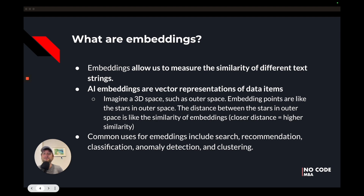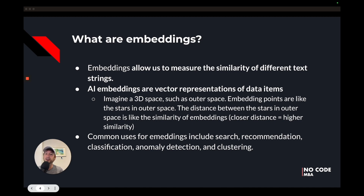Some common use cases for embeddings include search and recommendation — you can search for or recommend things that are closely related. You can also classify things based on unrelatedness, perform anomaly detection to find things that are not closely related to the rest of your data, and do clustering — finding groups of data points that are similar together. Those are the main use cases for embeddings.